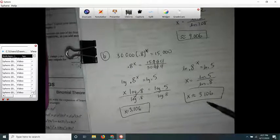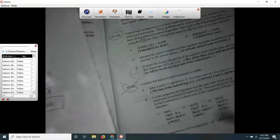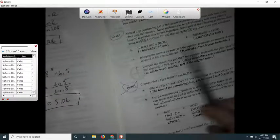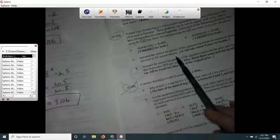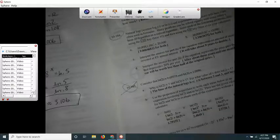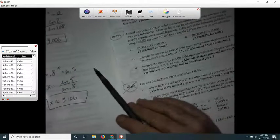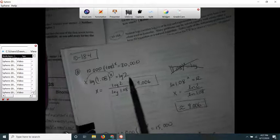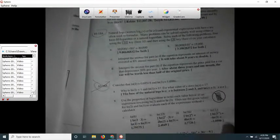Letter c says interpret the answer for part a if the equation represents the amount of money invested at 8 percent annual interest. Pretend that was your starting amount, and that is your interest, and that's what you end up with. If you noticed, it doubled—see, we had a 2 right there because it doubled. So x is the amount of time it would take for my 10,000 to turn into 20,000. It would take about 9 years for 10,000 to turn into 20,000. 9 years for it to double.